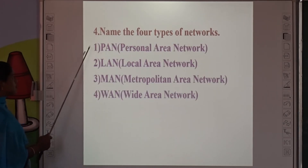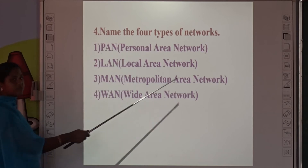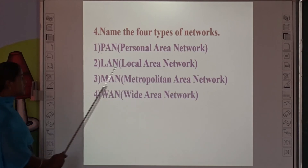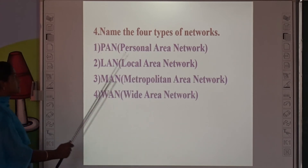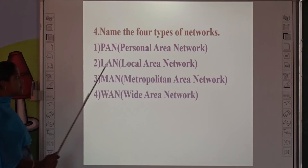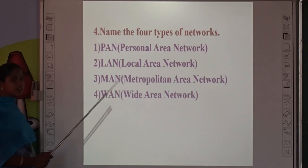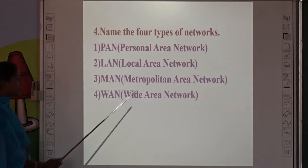Fourth question: Name the types of networks. First — PAN: Personal Area Network, used for local personal users. Second — LAN: Local Area Network, used in schools or buildings. Third — MAN: Metropolitan Area Network, for example a city. Fourth — WAN: Wide Area Network, for large geographic areas.